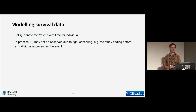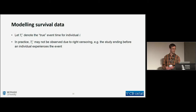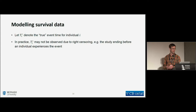Before thinking about how to simulate survival data, we need to talk about how we usually analyze it, because in most cases we want our simulation model to line up with our analysis model. We'll let T_i* denote the true event time for individual i. I use quotes for 'true event time' because in practice we might not actually observe it due to what we call right censoring — for example, the study might end before we see the event occur for some individuals.